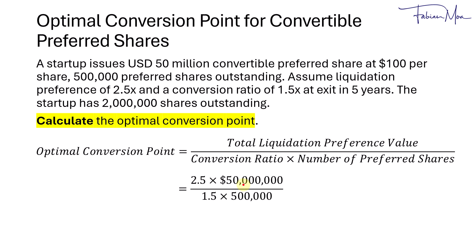What this tells us is that if the preferred shareholders opt for the liquidation preference value in five years' time, they will receive $125 million in cash. But if they choose to convert their preferred shares into common shares, that would yield 750,000 common shares. This gives us an optimal conversion point of $166.67.